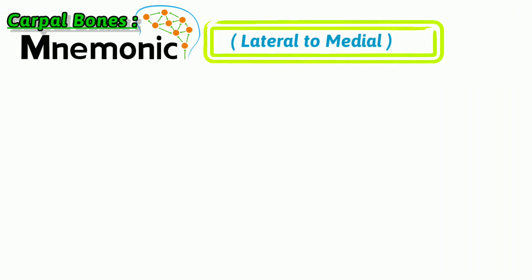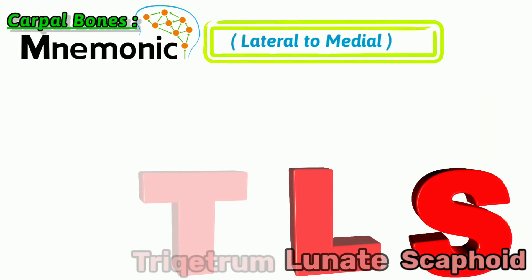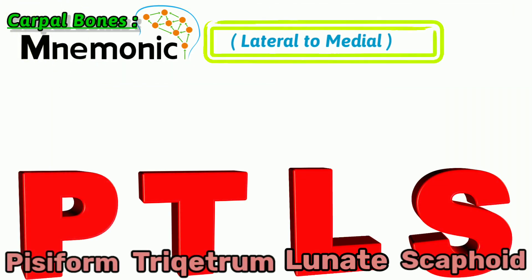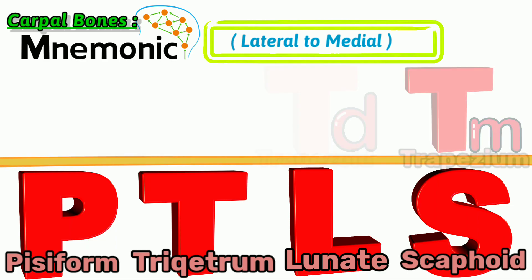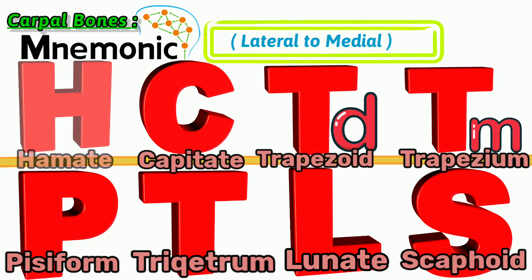Let's look at a popular mnemonic to memorize these eight bones, again from lateral to medial. The mnemonic is: 'She Looks Too Pretty' for the proximal row, and 'Try To Catch Her' for the distal row.